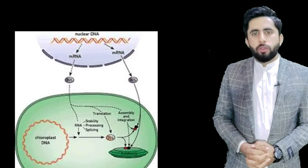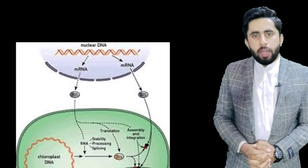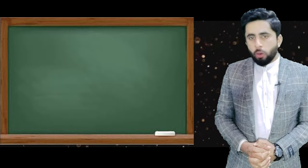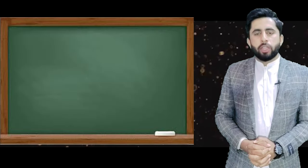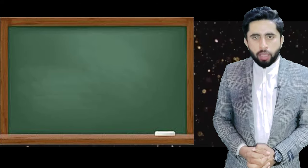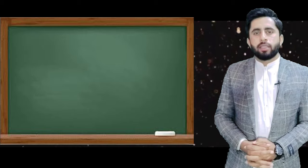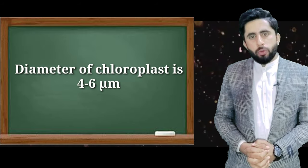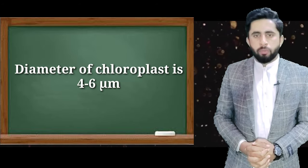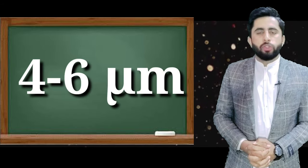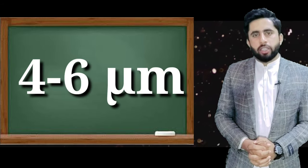Mitochondria کی طرح chloroplast کے اندر بھی اپنا DNA موجود ہوتا ہے اور یہ بھی self-replicating یعنی autonomous organelle ہے۔ اس کے علاوہ ان کا size اور shape cell to cell vary کرتا ہے۔ ایک important MCQ جو 12 مرتبہ paper میں آ چکا ہے: diameter of chloroplast is round about 4 to 6 micrometers۔ اب دیکھتے ہیں chloroplast کی structure کس طرح کی ہے۔